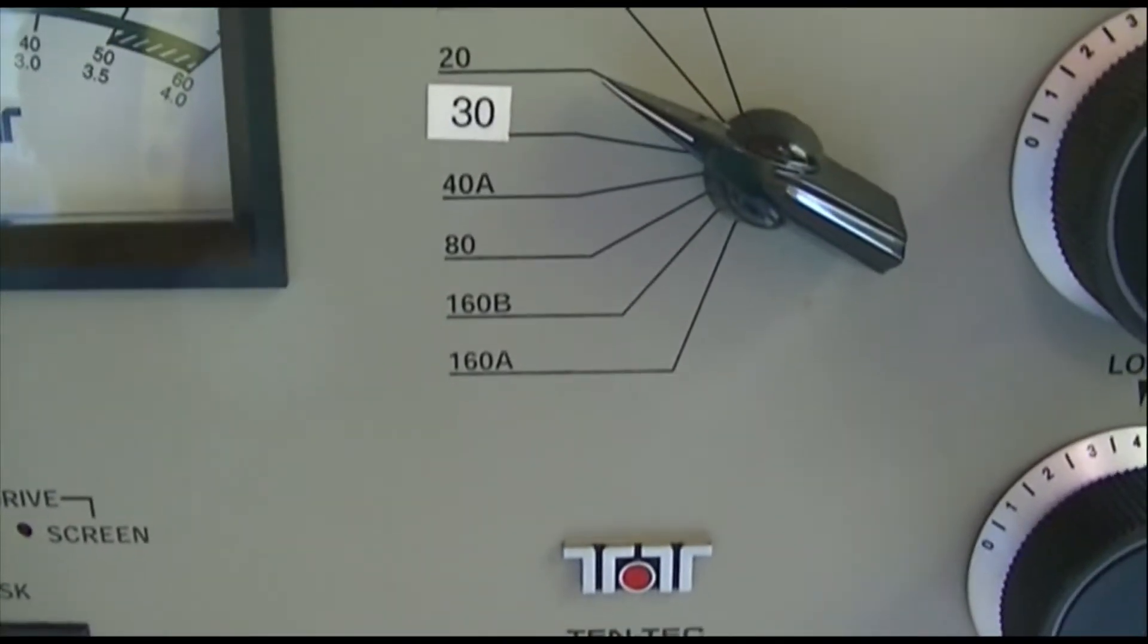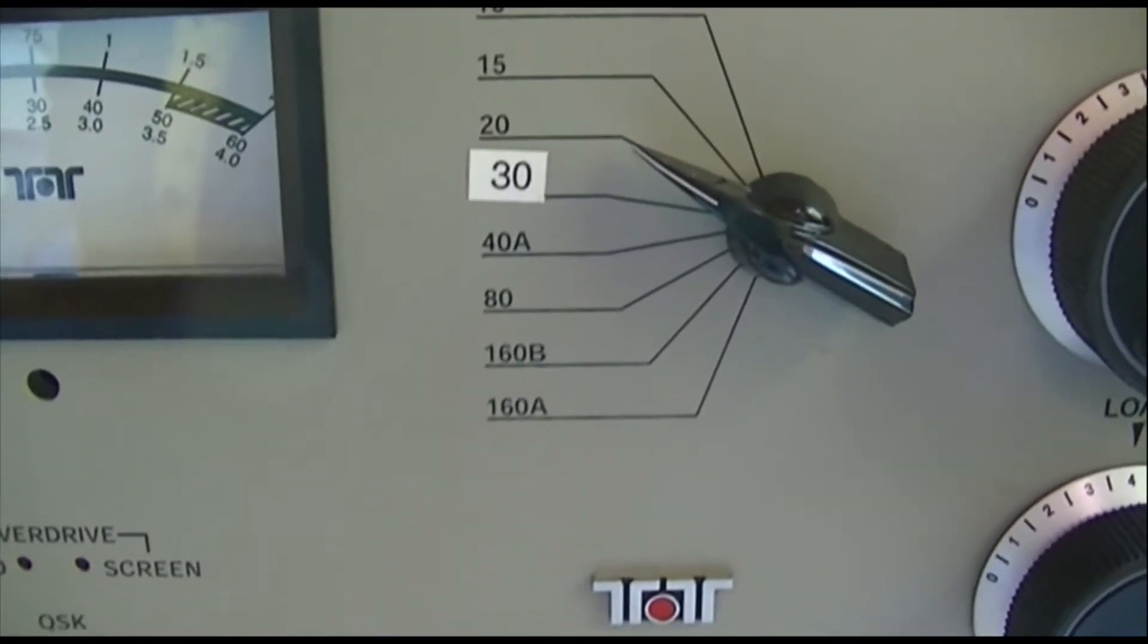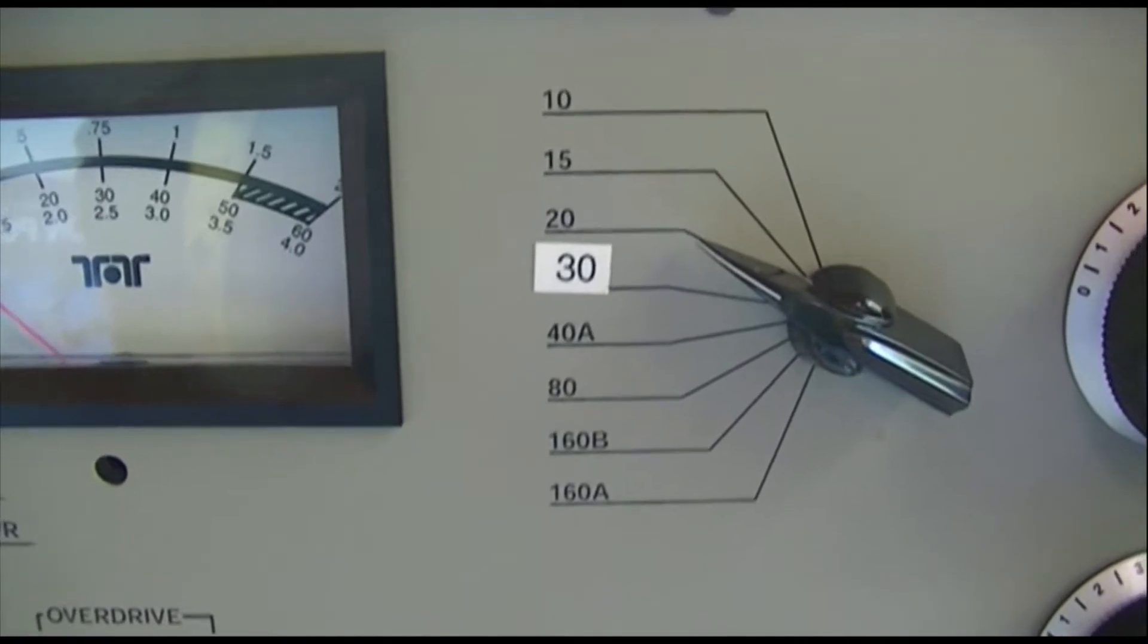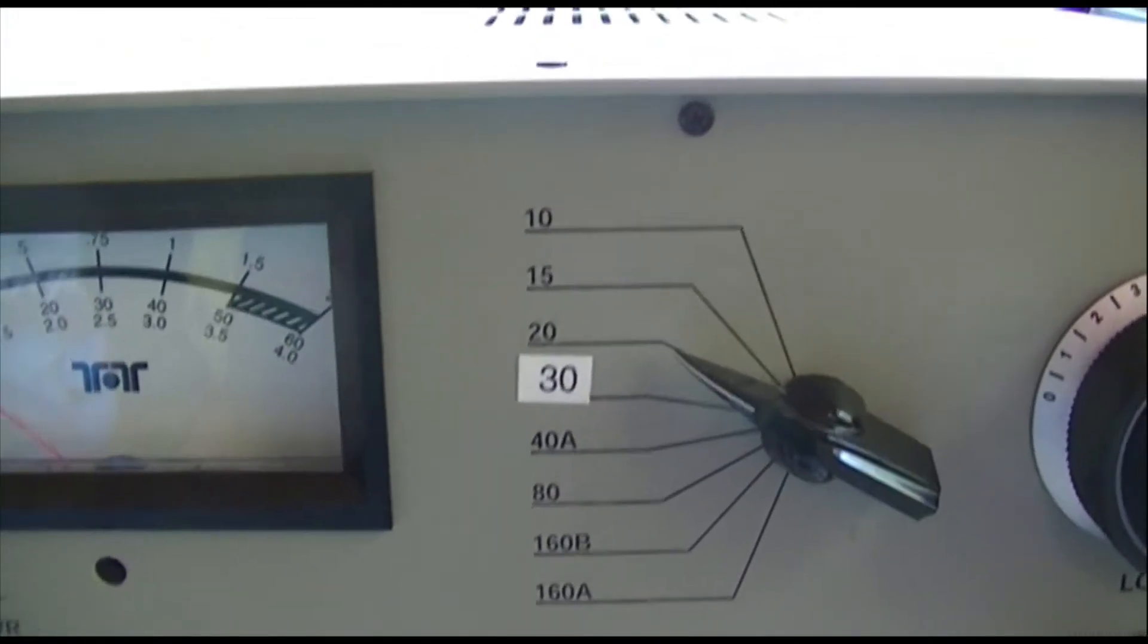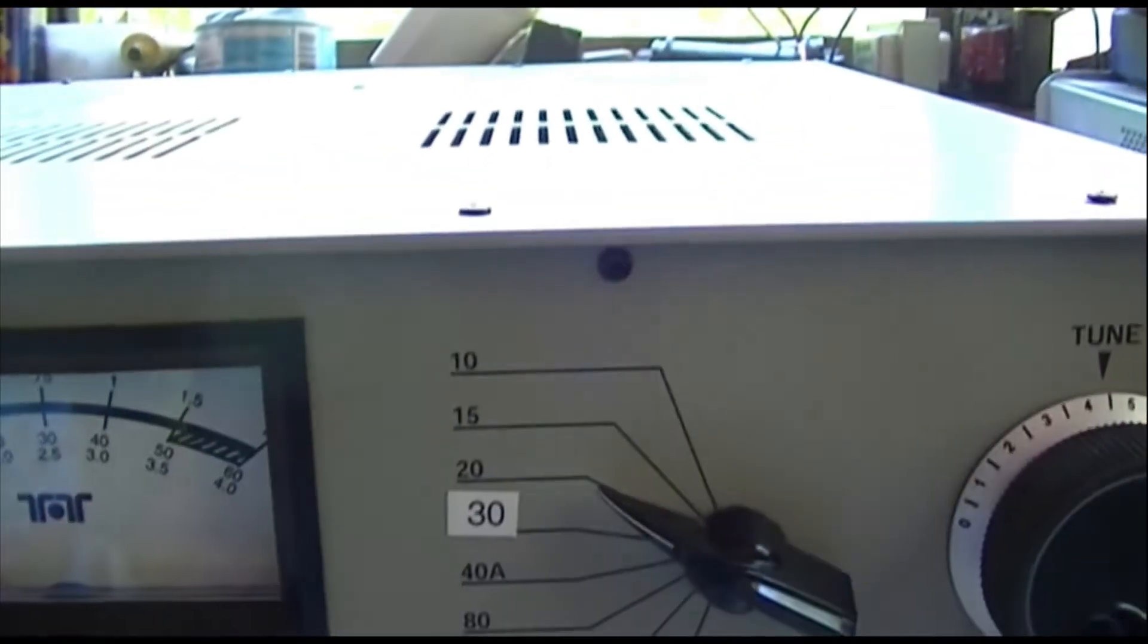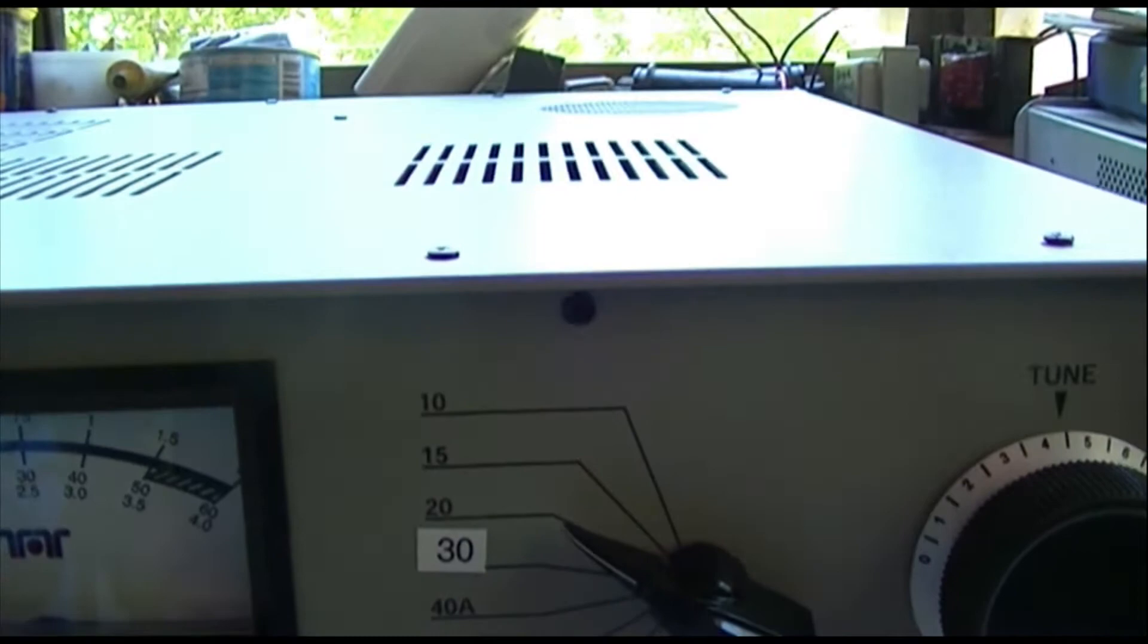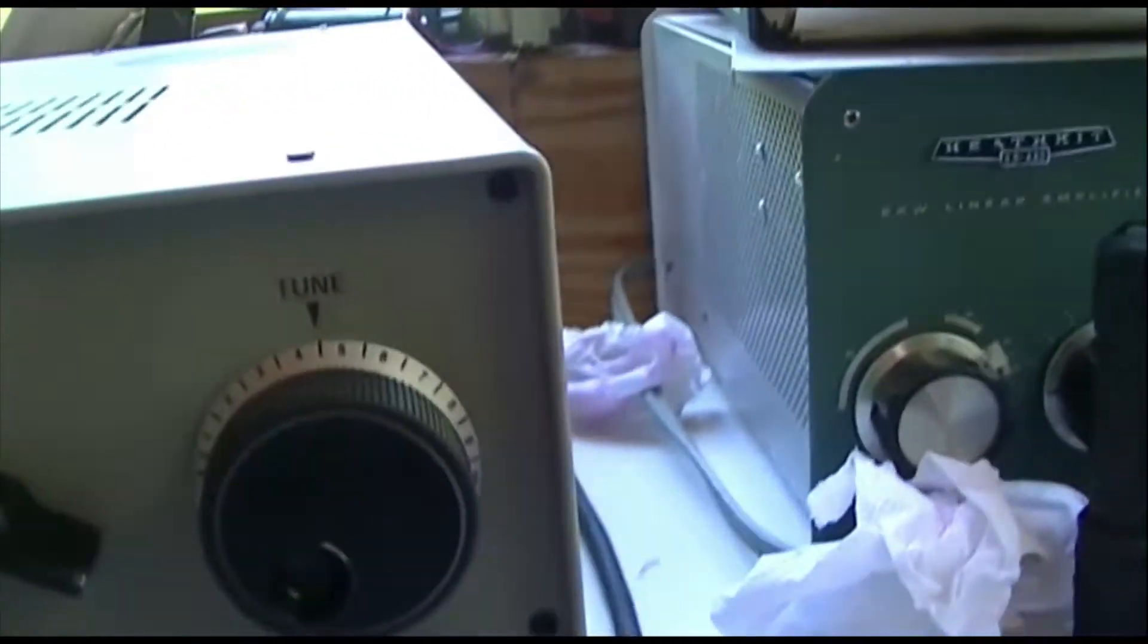Here's the band switch: 160 divided into two bands, 80, 40 divided into two bands. The previous owner's got this set for 30. We'll look inside and see what he's done and if he's changed the tap or not. 20, 15, and we'll see if 10 meters is enabled in this amp. I think it probably is.